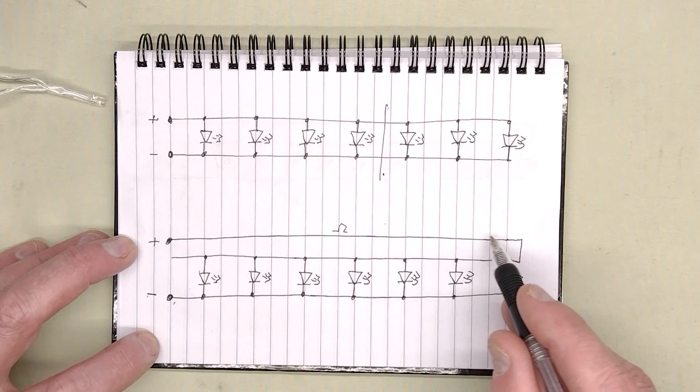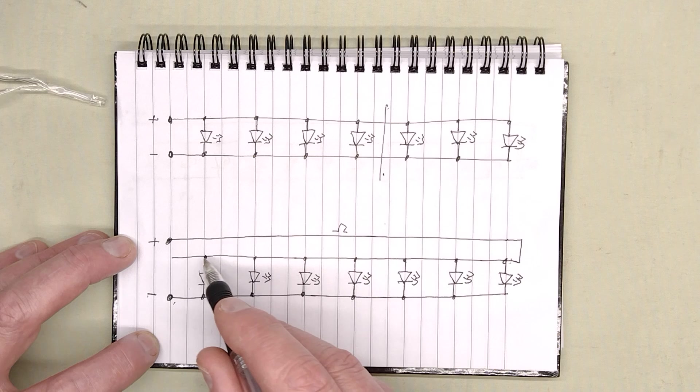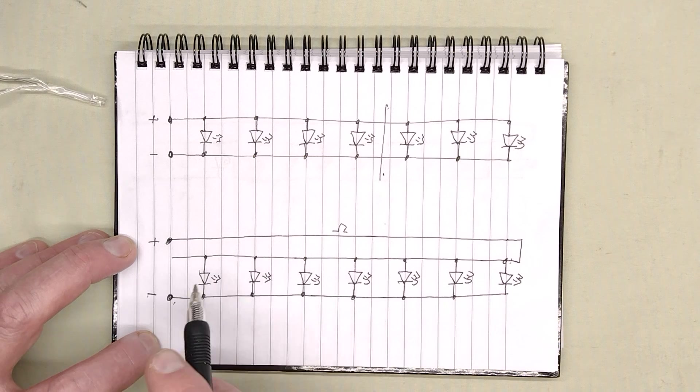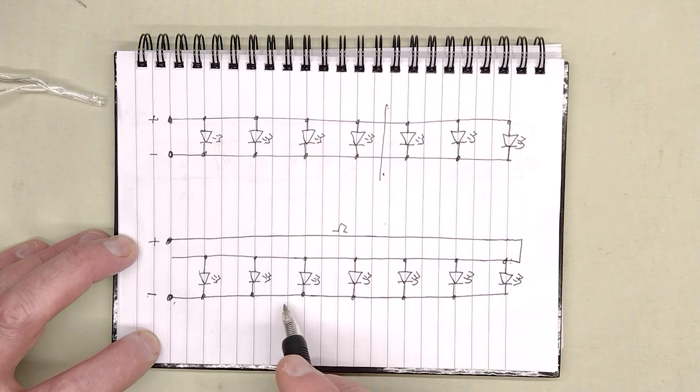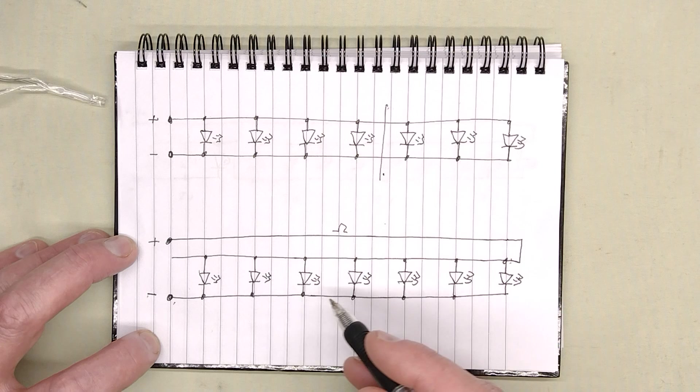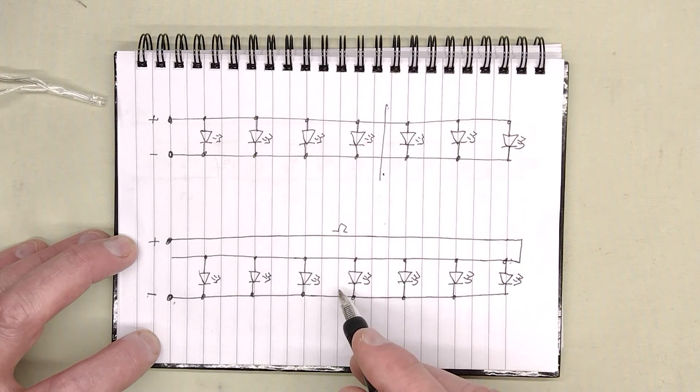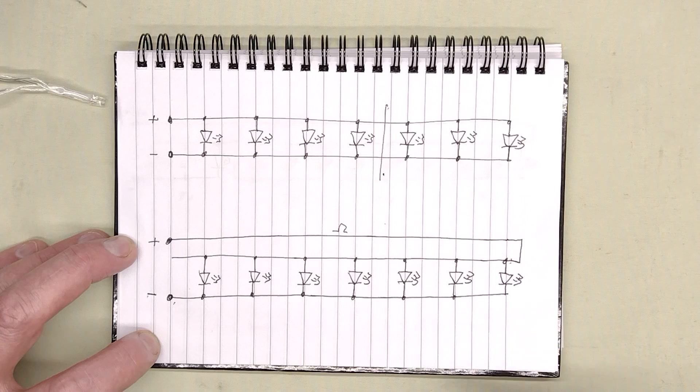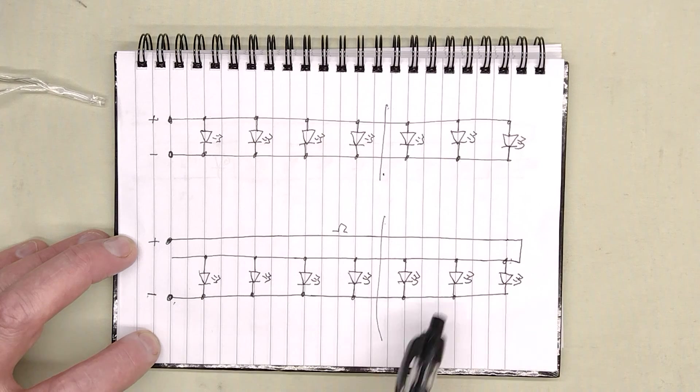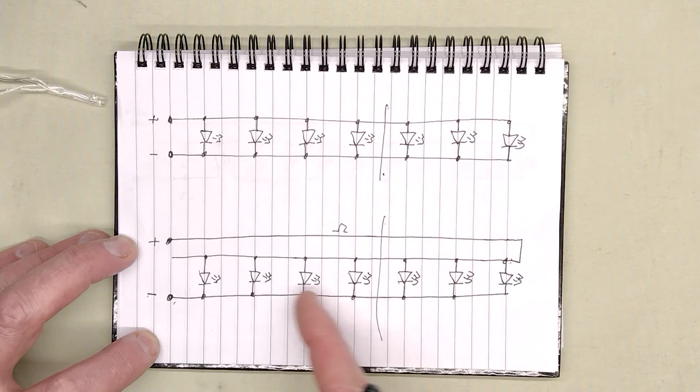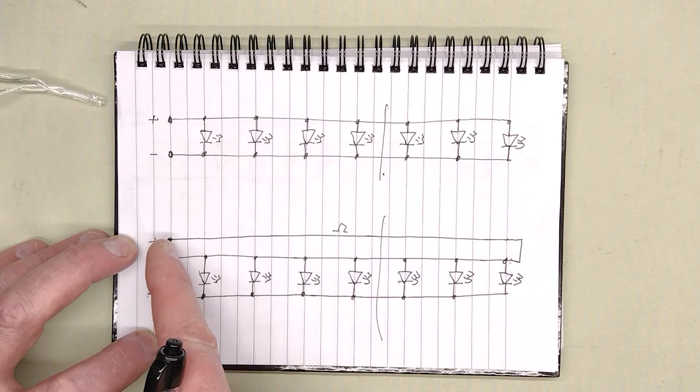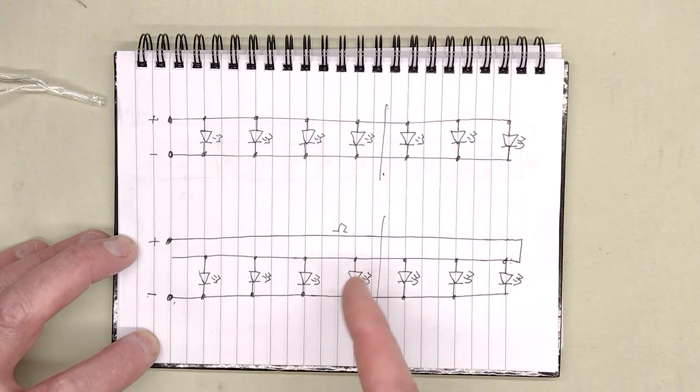For instance, this one at this extreme end, the resistance of the wire will be equal. It's this full length of wire through that LED and then this full length of wire back. Whereas the one at the very start of the set, it's the resistance of this wire then the resistance of all this wire through and then back. So no matter where in that circuitry you were to measure the current of an LED, you'll see it's pretty much identical because the resistance of the wire is equal for them all.